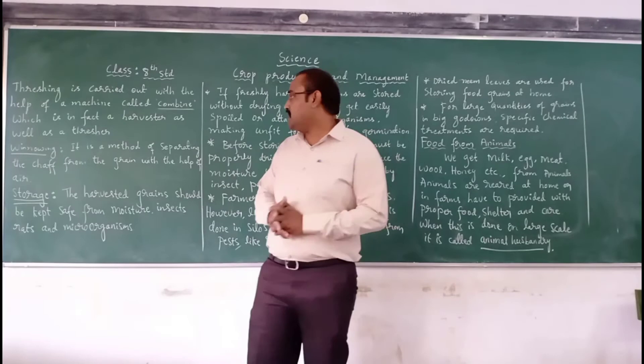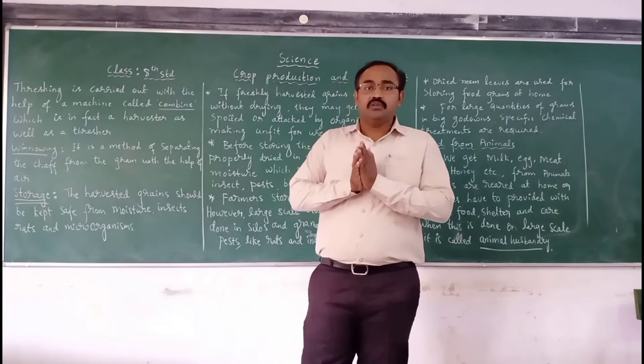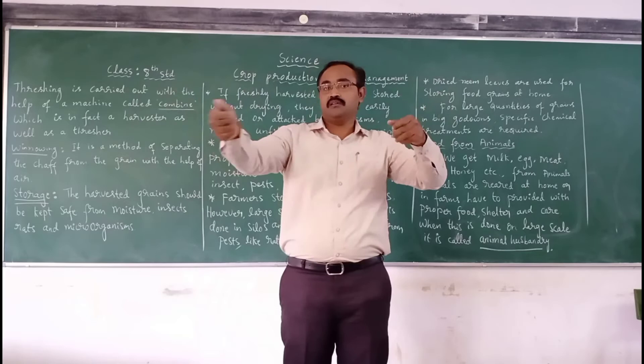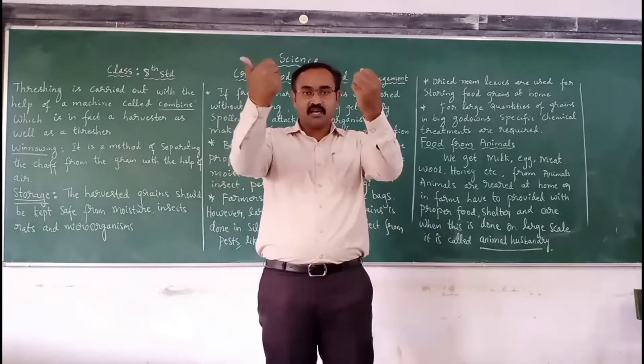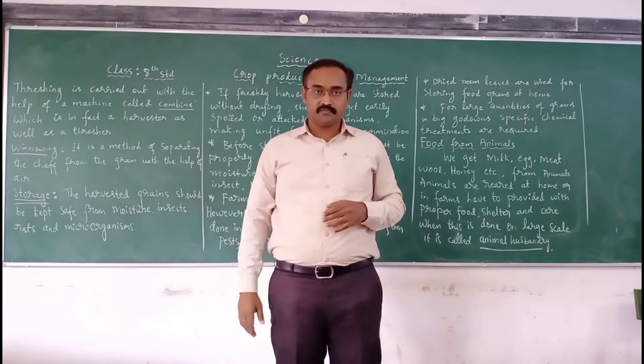The next process is winnowing. Winnowing is also a method of separating grain from the chaff, and here it is done with the help of air. Usually, farmers stand at some height and drop the grains while slightly moving them, so that every grain particle falls down while the lighter particles like chaff, leaves, and dust are carried away by the wind.